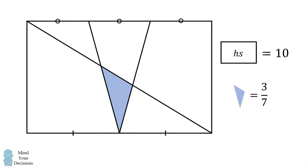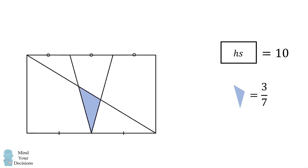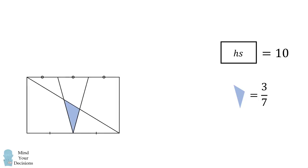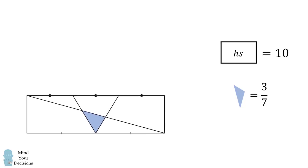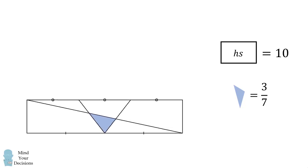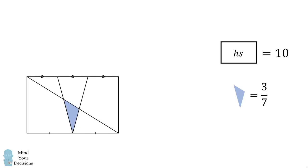What's remarkable about the answer is it doesn't depend on the particular dimensions of the rectangle. As long as the rectangle has an area equal to 10, the triangle has an area equal to 3 over 7. Incredible.